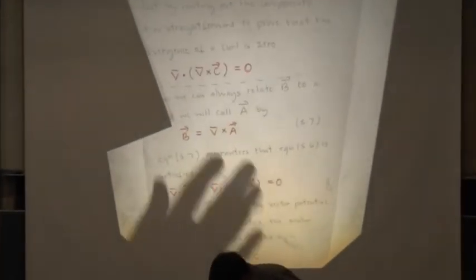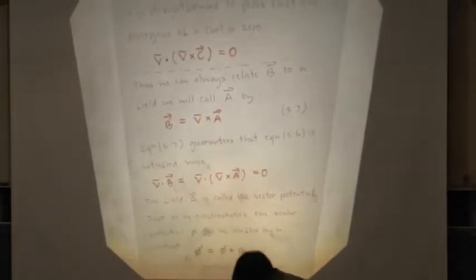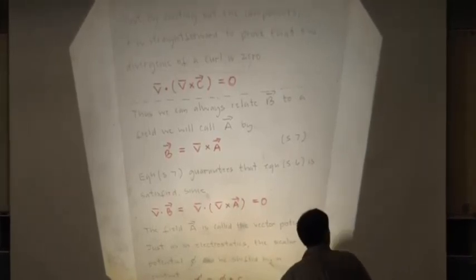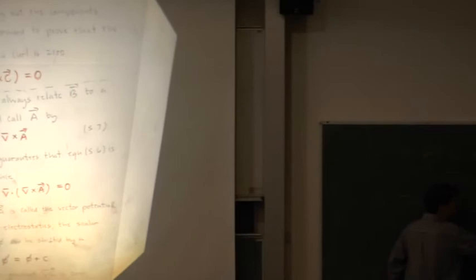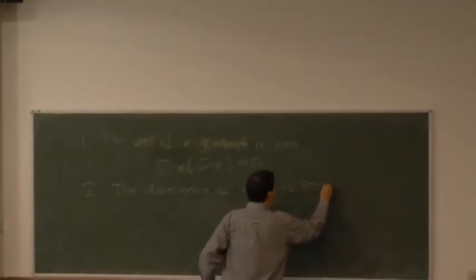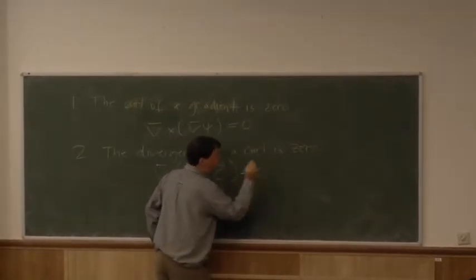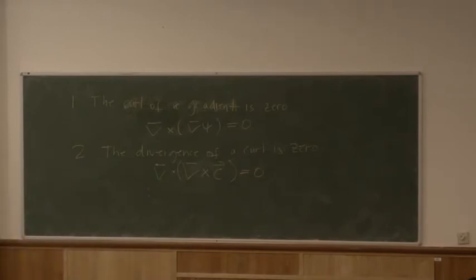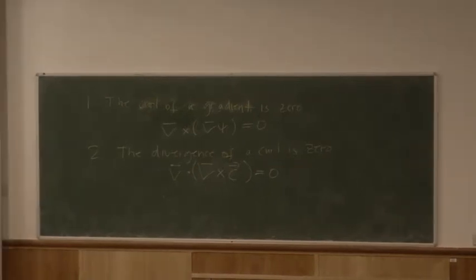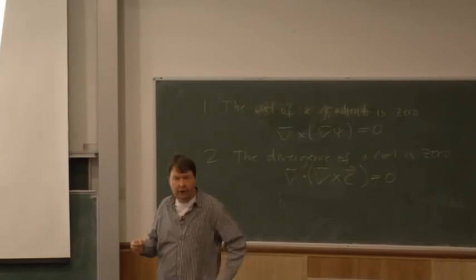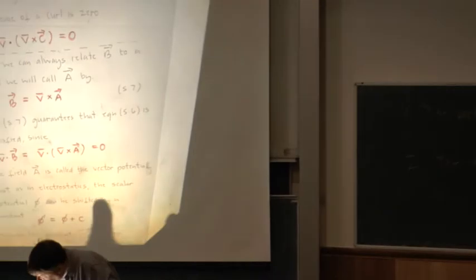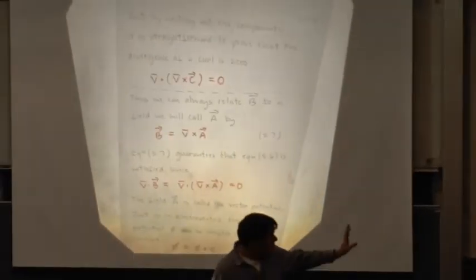So it's all very well saying what the magnetic field isn't — what is it? Just by writing out the components, the divergence of a curl is zero. Mathematically, del dot curl of C is naught. This is the second of the three identities that we need, and the second and third ones will be crucial when we do the unification theory.